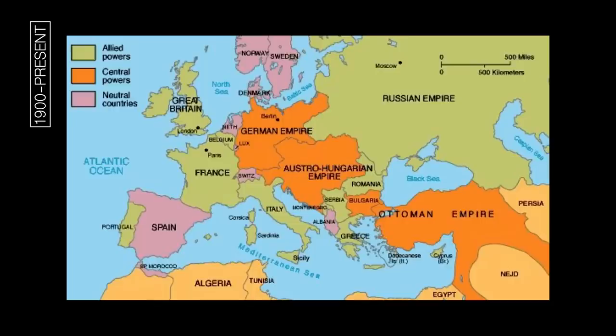During World War I, the Ottomans fought on the side of the Austro-Hungarian Empire and Germany. Geographically, the Austro-Hungarian Empire and the Ottomans were physically very close, and they had an economic relationship with the Germans — they even desired to create a Berlin-to-Baghdad rail system. The Young Turks were incredibly influential during World War I as they planned to Turkify the empire: one religion, one language, one people.